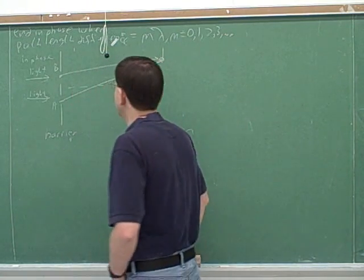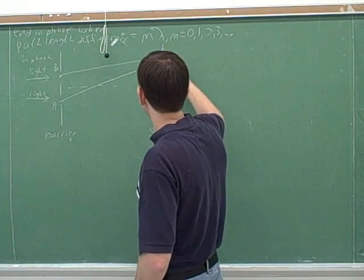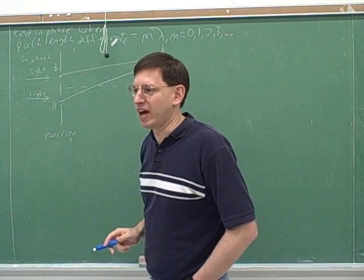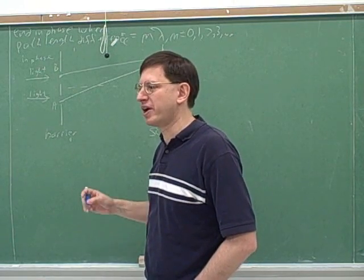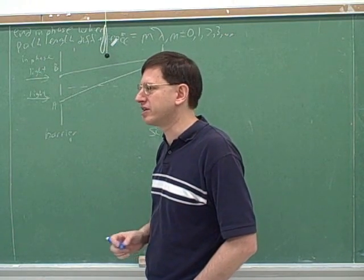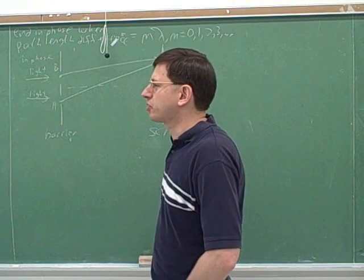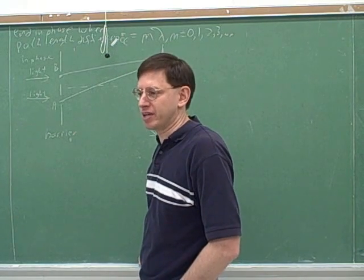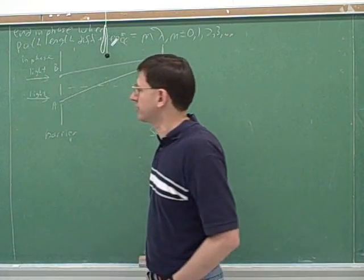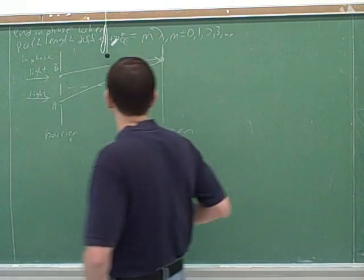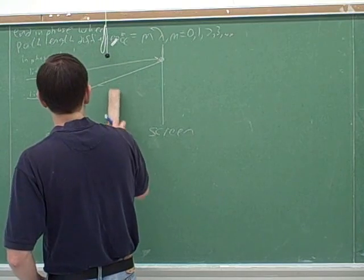Now, of course, in between the brightest spots and the darkest spots, there's kind of intermediate spots, right? There's really a smooth gradation of going from brighter, brighter, brighter, then darker, darker, darker, then brighter. But in this course, you're really just mainly focusing on the extremes, the bright spots and the dark spots. We're just going to focus on when they're completely in phase or completely out of phase.